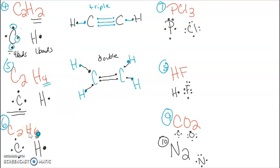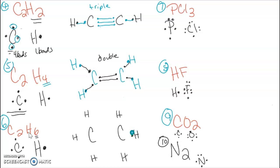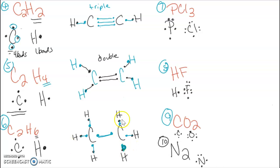For C₂H₆ with six hydrogens, we have our two carbons in the center, each bonding with three hydrogens. Each hydrogen still gives one electron, and carbon still has four to share — three with the hydrogens and the fourth one in the center between the two carbons. That gives three single bonds between hydrogen and carbon, and one single bond between the two carbons. Each carbon still has two, four, six, eight electrons and four bonds following the HONK rule.